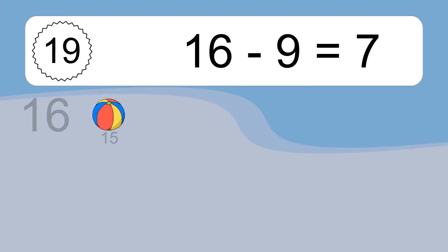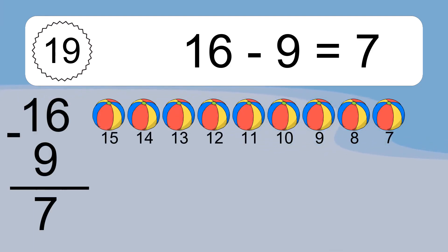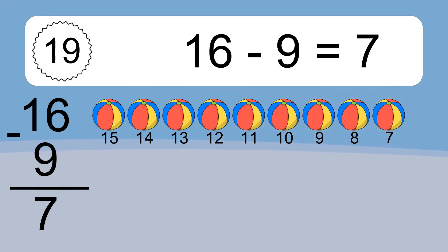16 minus 9 equals what? 16 minus 9 equals 7. Let's count it: 15, 14, 13, 12, 11, 10, 9, 8, 7.